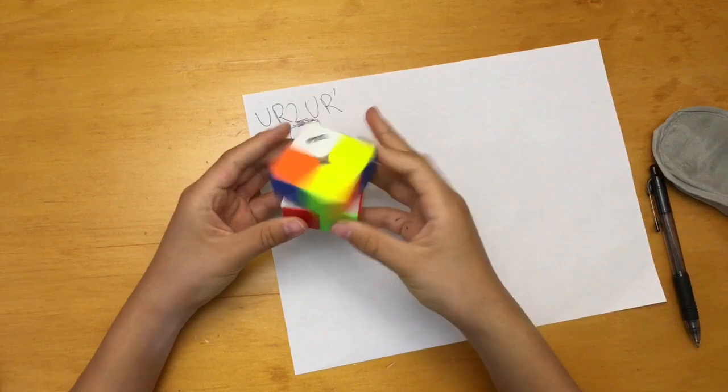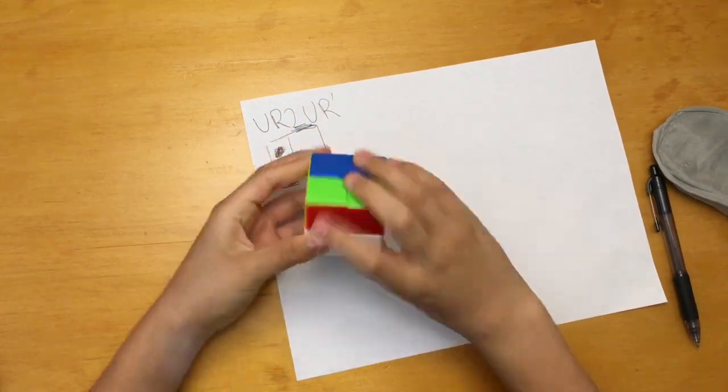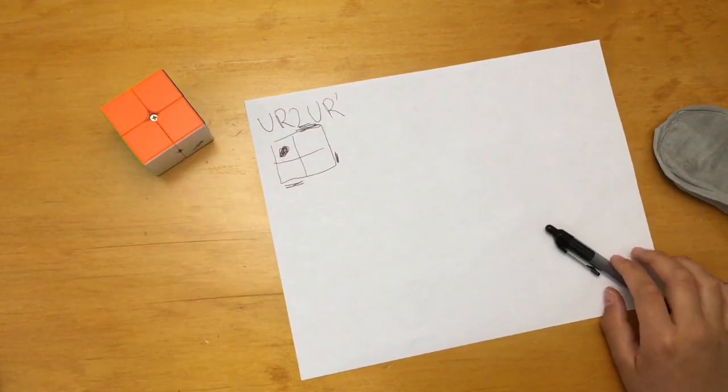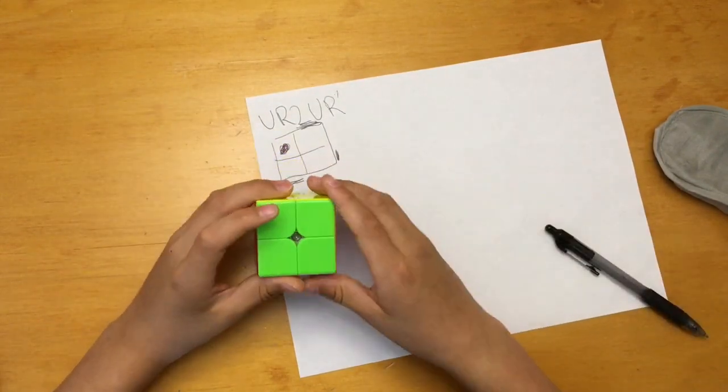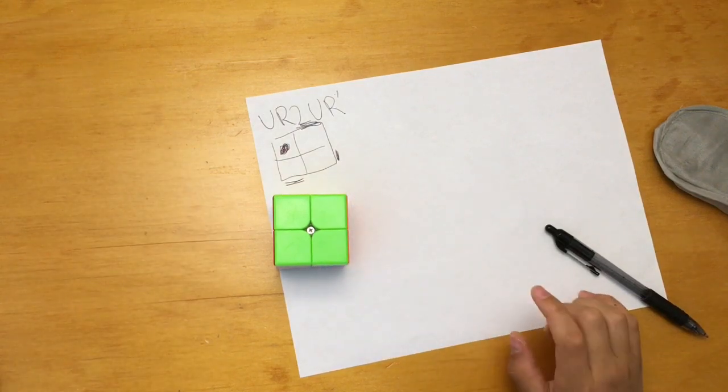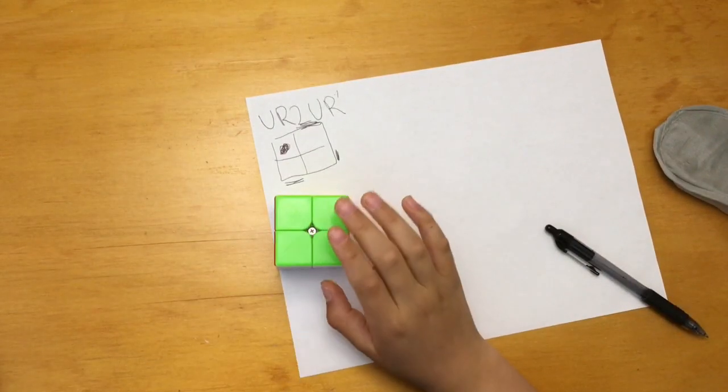Then solve the side and then go to the anti-sune without pause and you have PBL. This is a really nice skill to have just so you can plan out more inspection, reduce pauses, which is a big part of 2x2 since it's such a fast event.